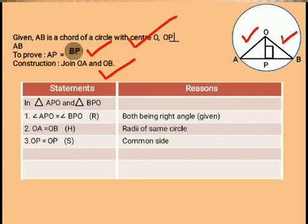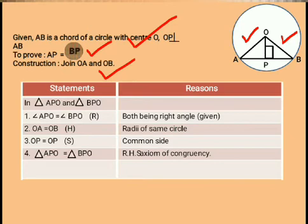From statements one, two, and three, it is clear that triangle APO and triangle BPO are congruent, following the RHS axiom of congruency.